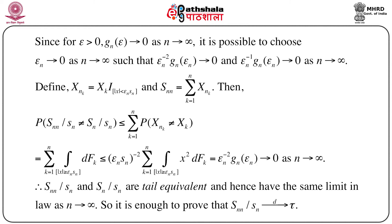Now consider ε > 0 and G_n(ε) → 0 as n → ∞, meaning we assume Lindeberg's condition holds. It is possible to choose a sequence ε_n → 0 such that ε_n^{-2} G_n(ε_n) → 0 and ε_n^{-1} G_n(ε_n) → 0 as n → ∞. Define a new random variable X_{nk} = X_k · 1_{|X_k| < ε_n s_n}, and define S_{nn} = Σ_{k=1}^{n} X_{nk}.